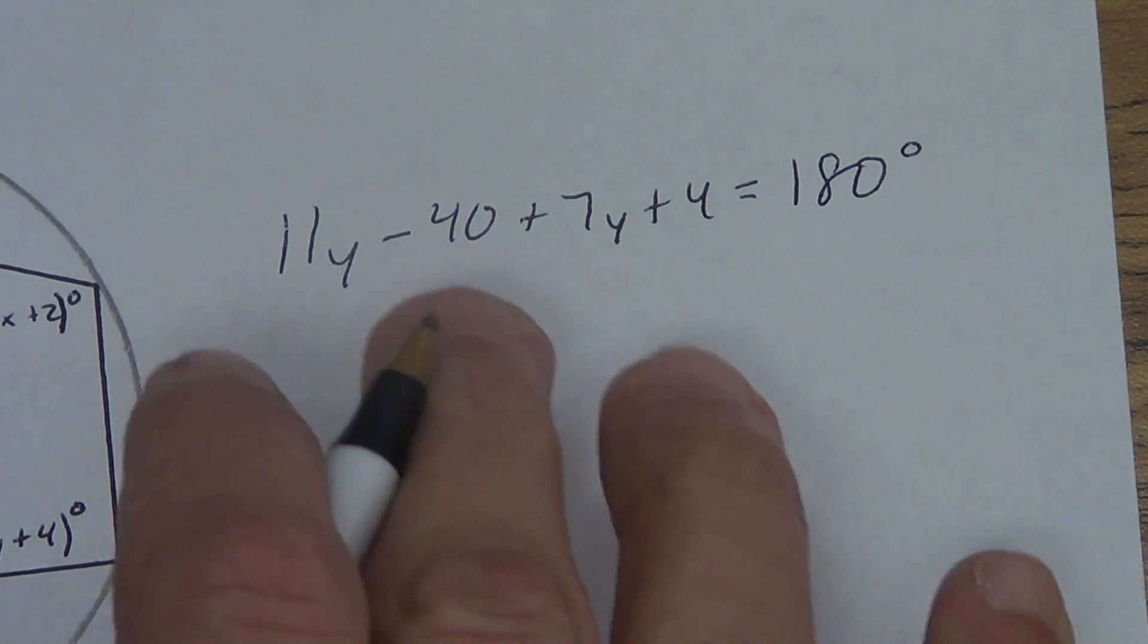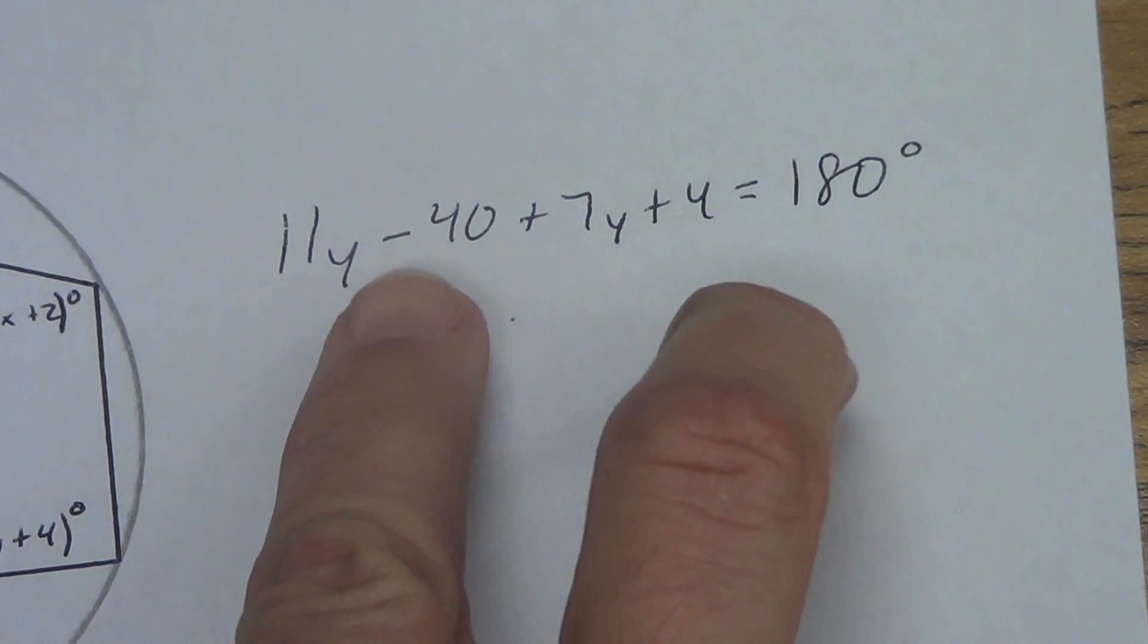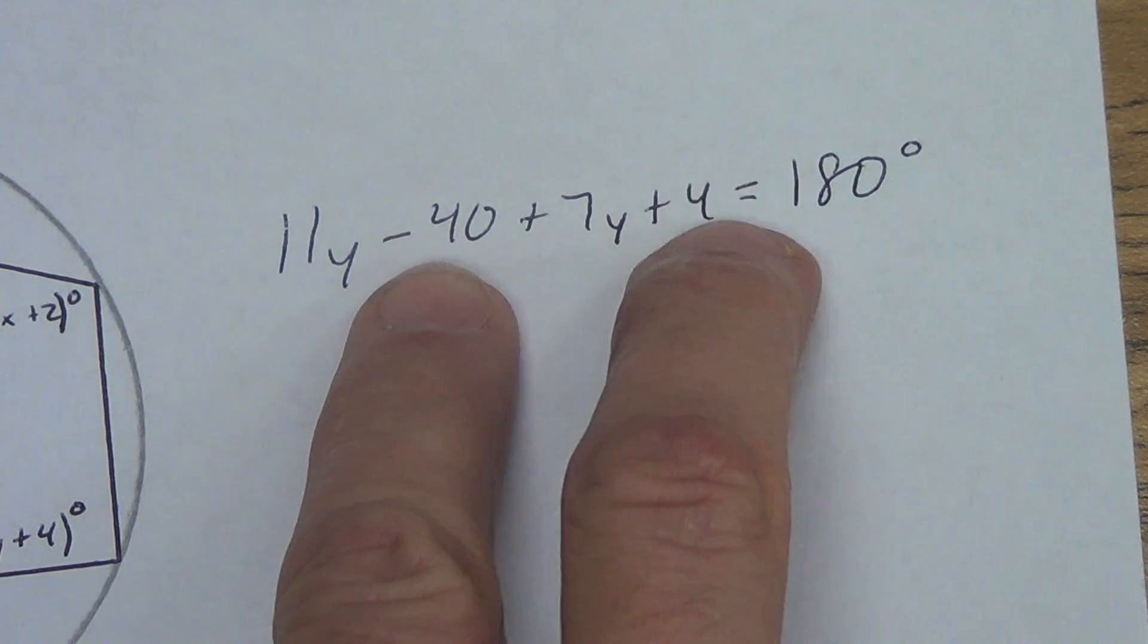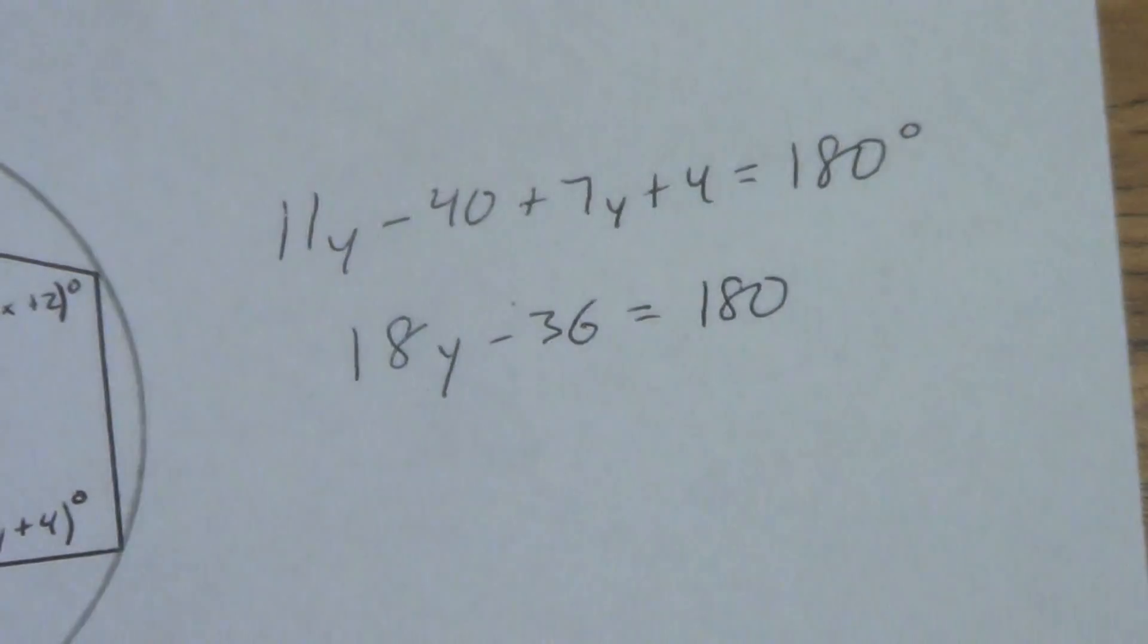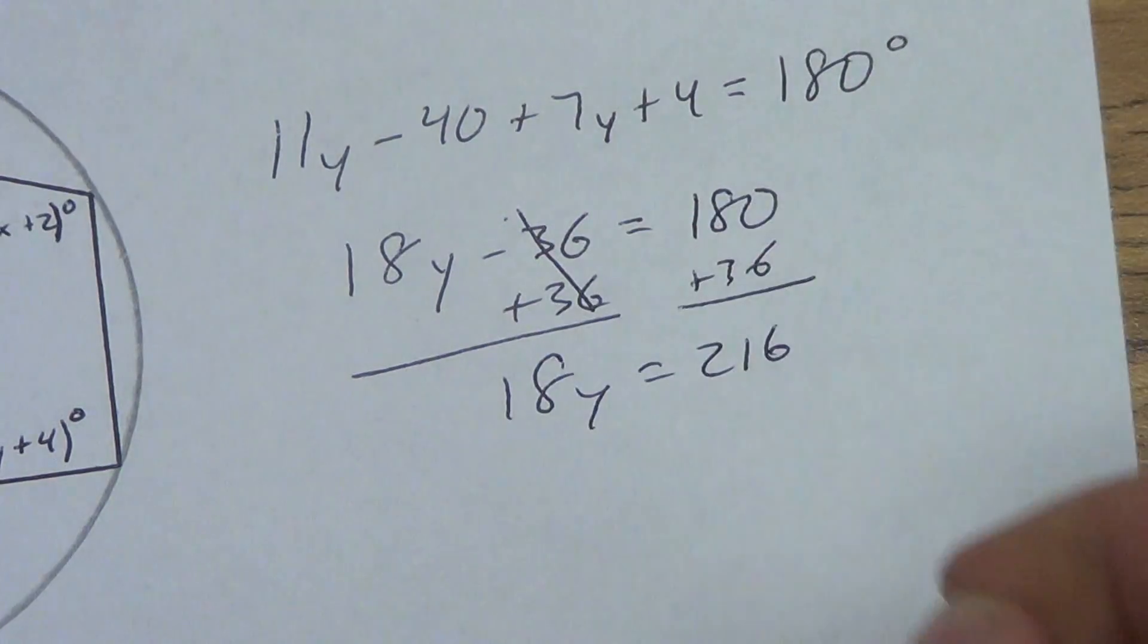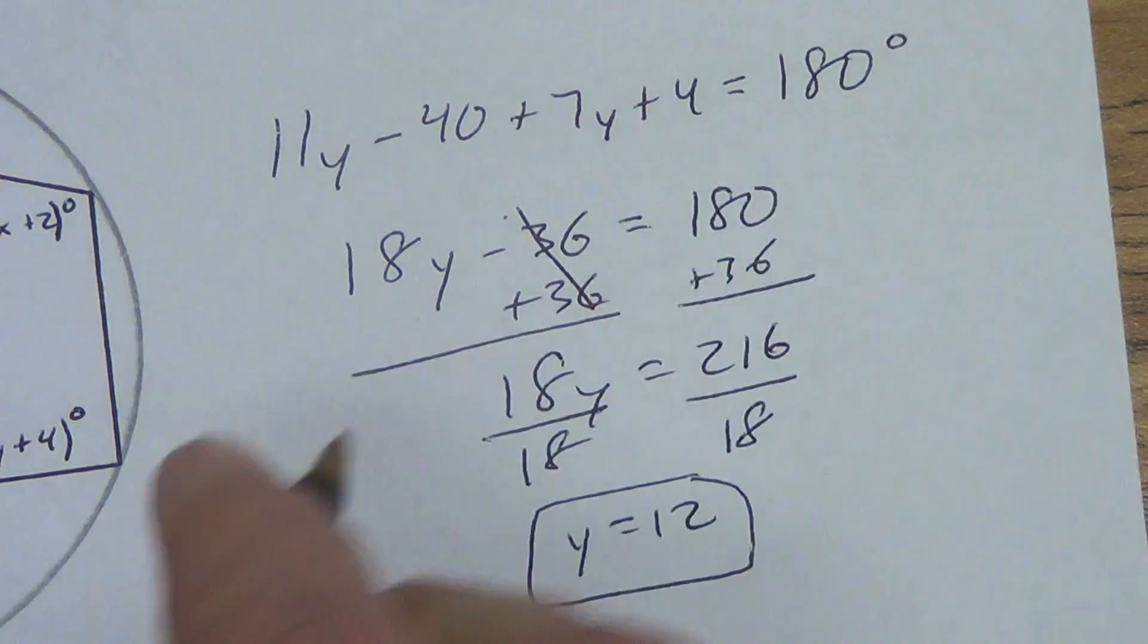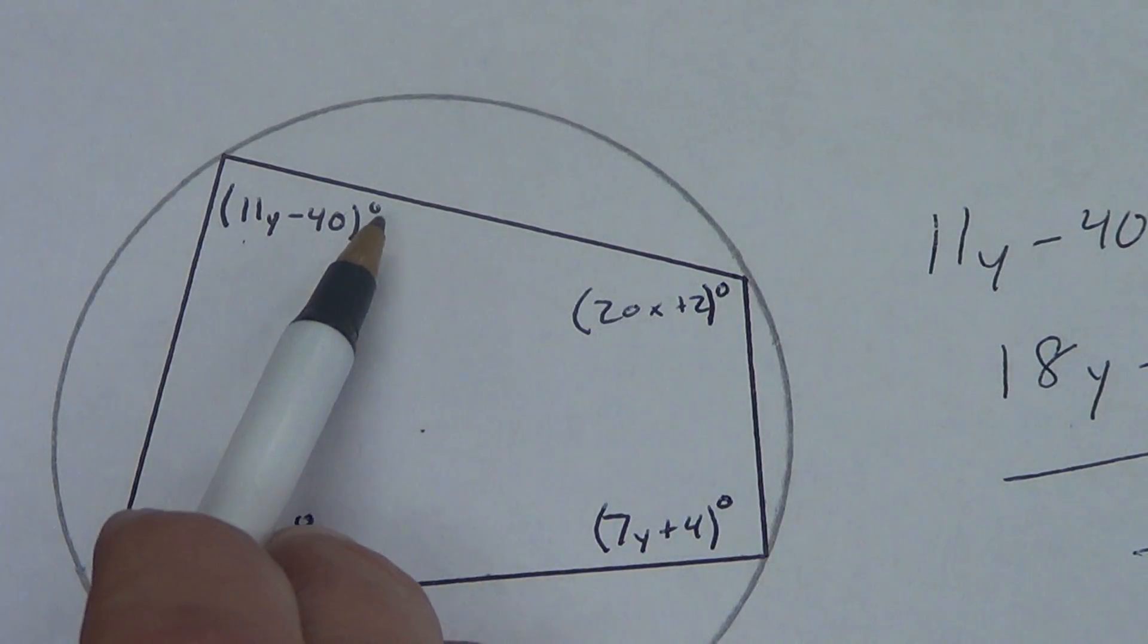I can solve that. Like terms, I've got 11y and 7y, add them together to get 18y. I have negative 40 and positive 4, they're different signs, so we subtract and get negative 36. 18y minus 36 equals 180. Add 36 to both sides, 18y equals 216. Divide by 18, y equals 12. I don't need a label on it, it's not a length, and we already have a degree symbol.